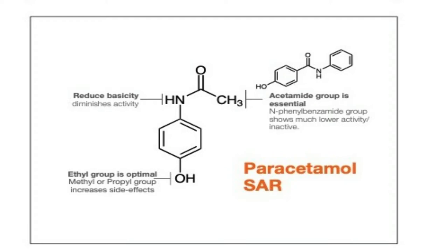The amino group needs to be there — remove it with the carbon and it doesn't work. The O-H group is already optimal. If you actually have a methyl, propyl, or other groups there, it increases the side effects. If you remove this altogether, it goes back to being acetanilide, and it doesn't work as well — it gives you more toxicity as well.